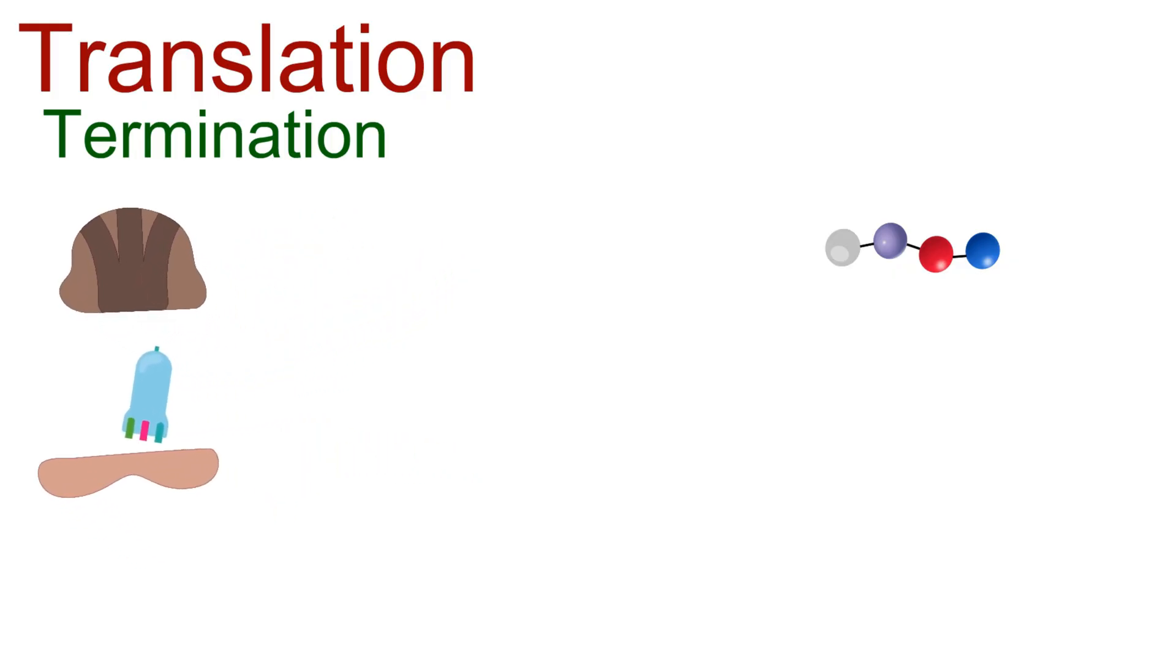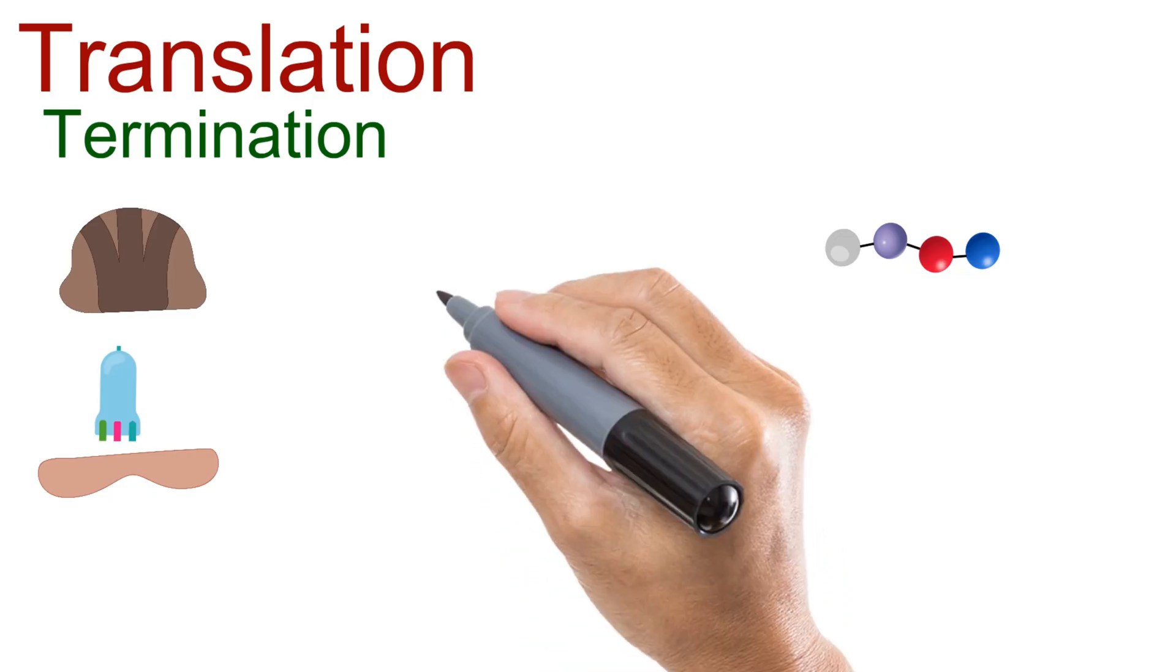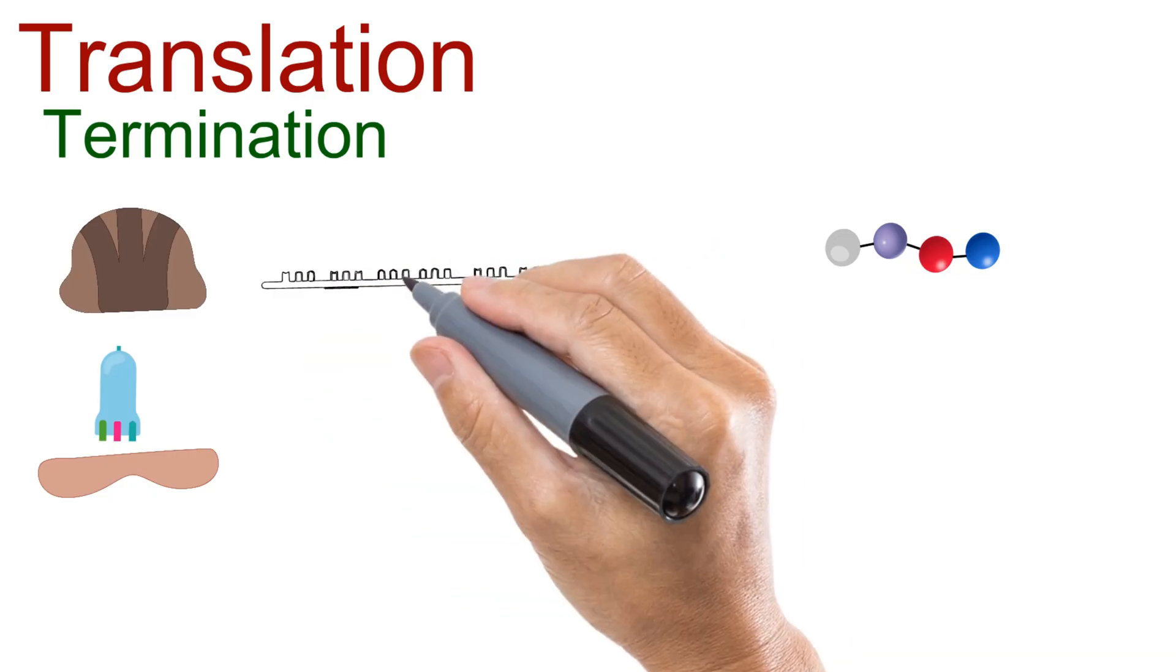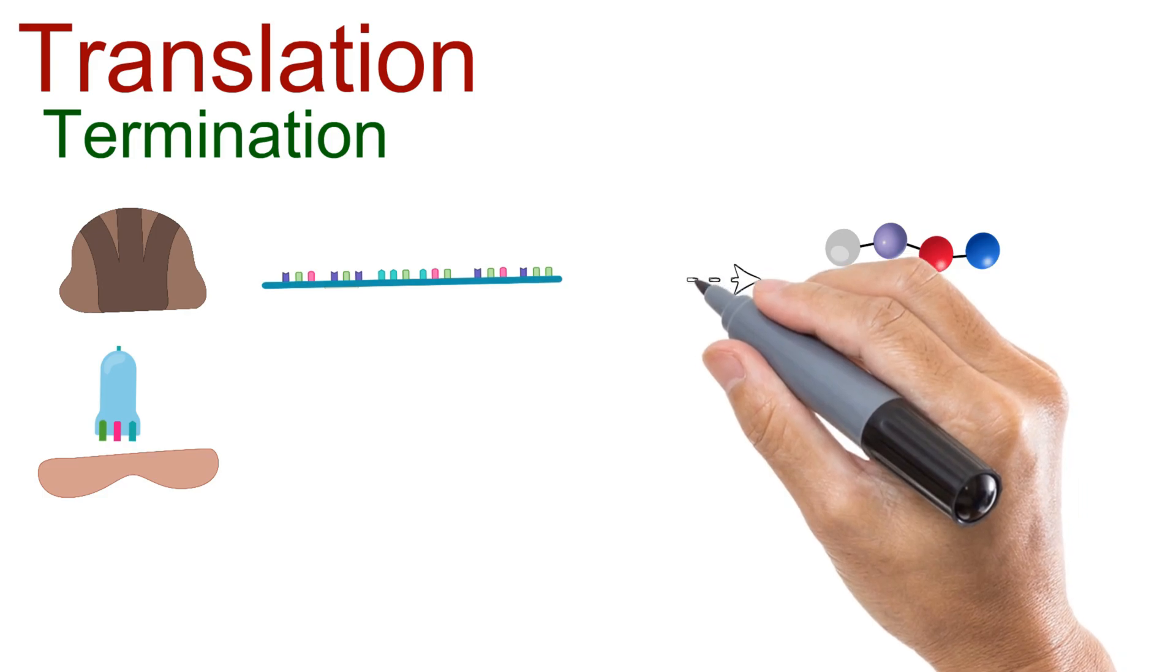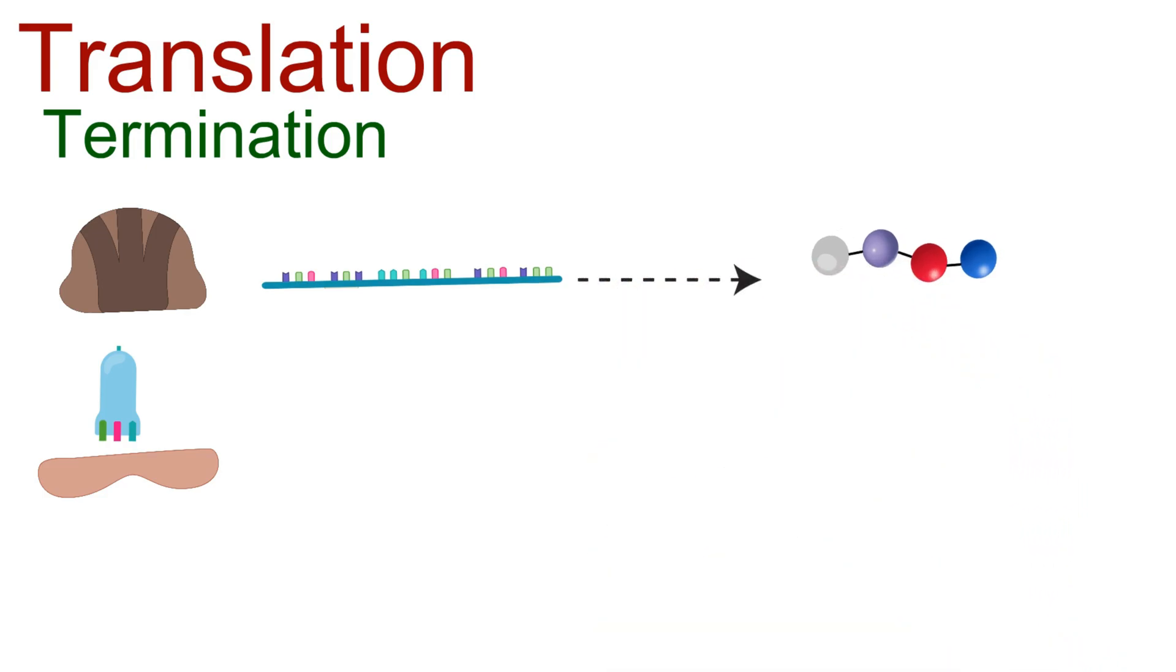And that's the complete journey of protein synthesis: initiation, elongation, and termination. From a simple sequence of nucleotides in mRNA, the cell constructs a full polypeptide chain, the foundation of proteins.